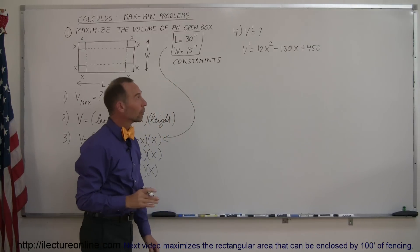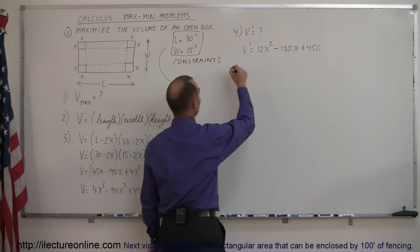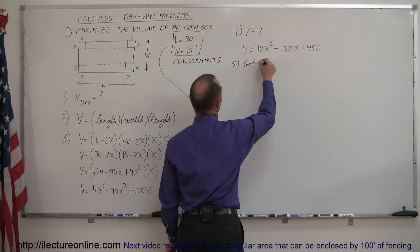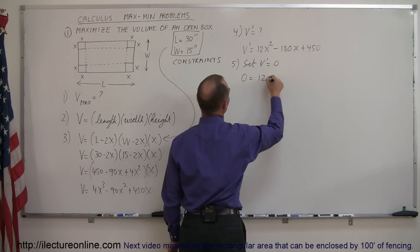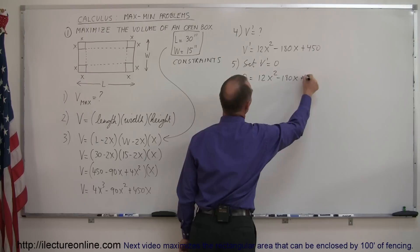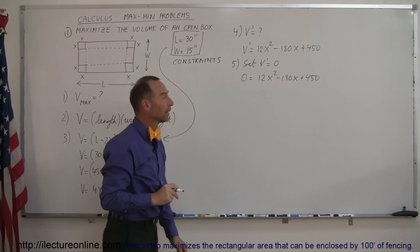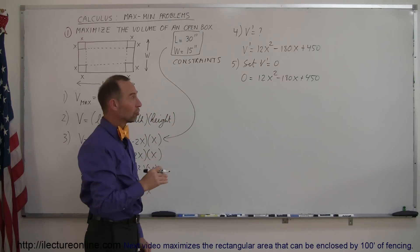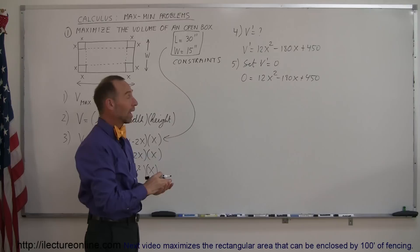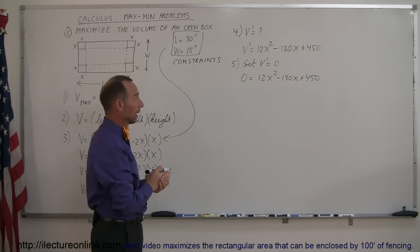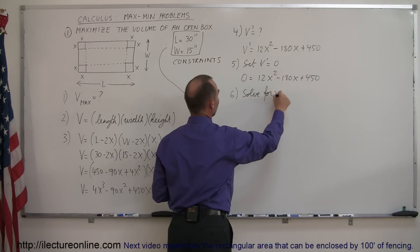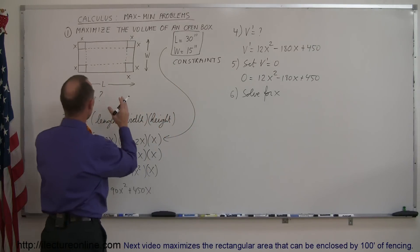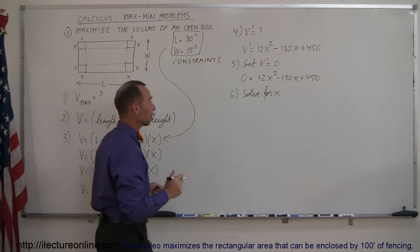Step 5, we're now going to set the derivative equal to 0. So 0 is equal to 12x squared minus 180x plus 450. And why do we do that? We know that where the derivative is equal to 0, the slope of the equation will be equal to 0, and of course where we have a maximum or minimum of any particular item, that is where the slope will be 0. When we now solve for the variable, in this case solve for x, we should find the value for x that will make the box the maximum volume, or give the box the maximum volume.